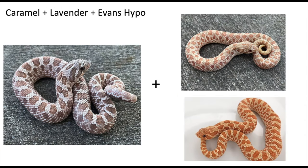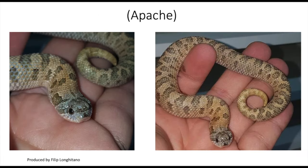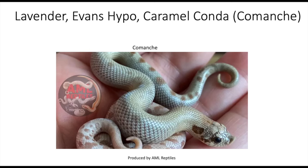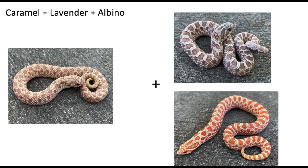Next up we have the caramel lavender Evans hypo, which gives us what's called an Apache — a very cool snake, also shown in my previous video. Then look at this combination: lavender Evans hypo caramel anaconda, which is like the Apache but looks very different from the one before it, just with the addition of the anaconda gene.